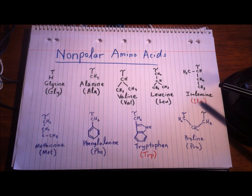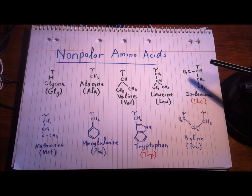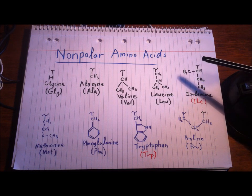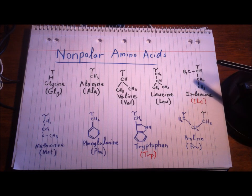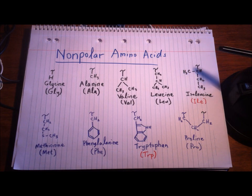Now this is kind of weird: isoleucine doesn't have the isobutyl R group. Isoleucine has four carbons so it's still a butyl, but because it's connected on the second carbon and it's a chain, it's called secbutyl — a secbutyl configuration.